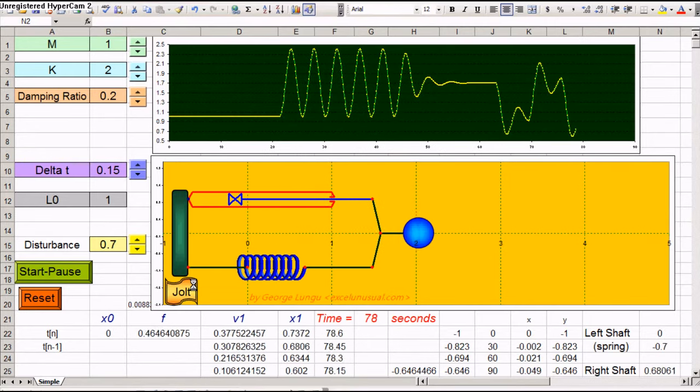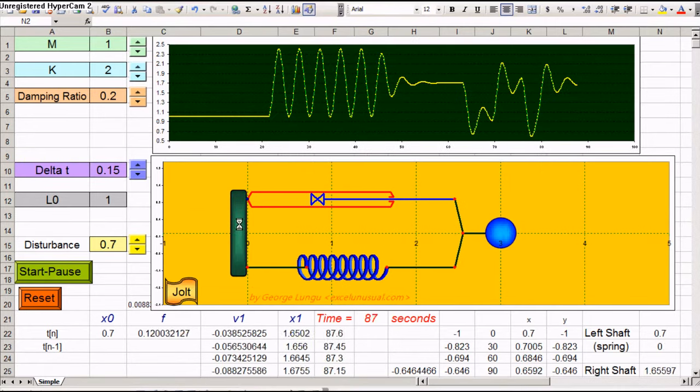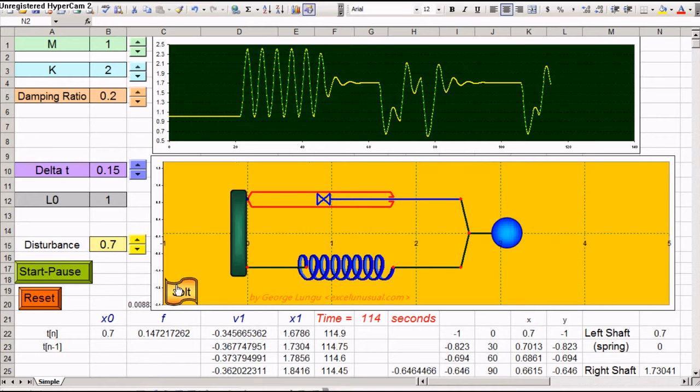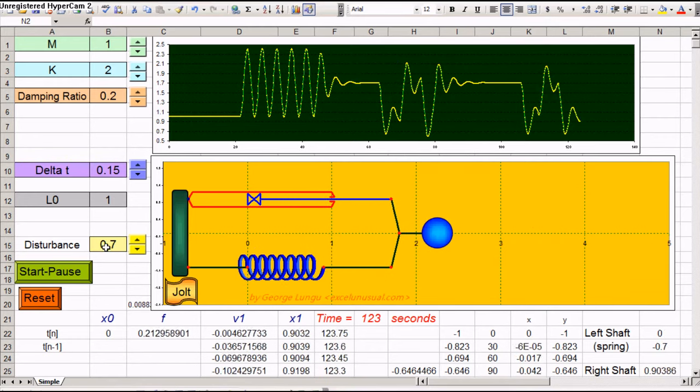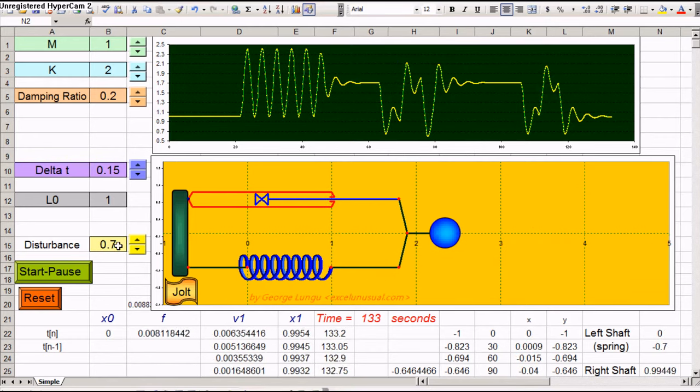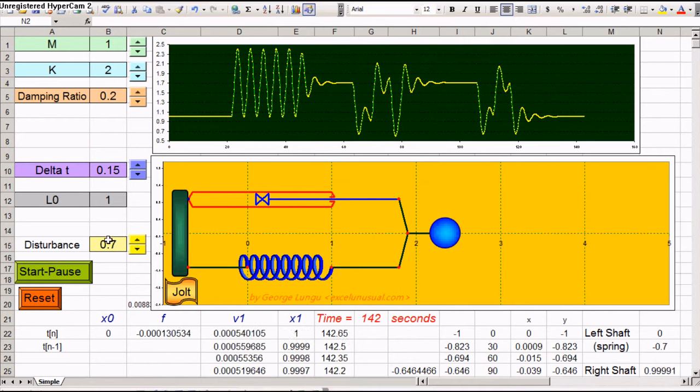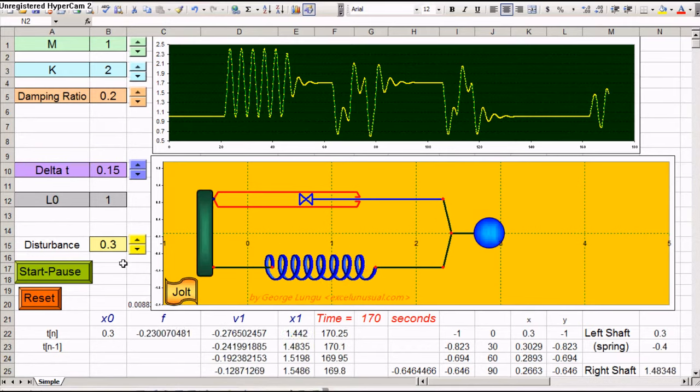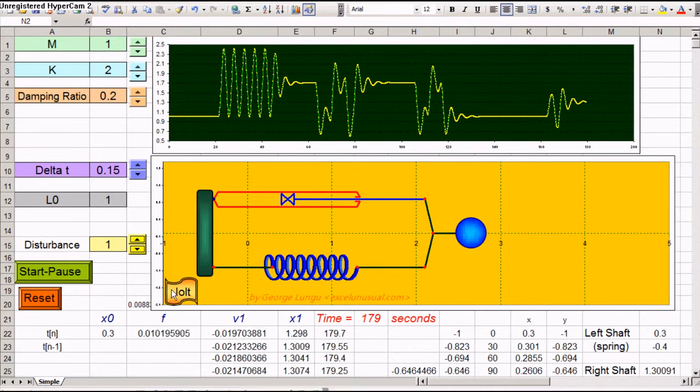Essentially what jolt does, the jolt operation moves the base plate here, holding this whole system back and forth by a distance of 0.7 meters. We can change this 0.7 meter, make it 0.3 for instance, much smaller, or make it 1.